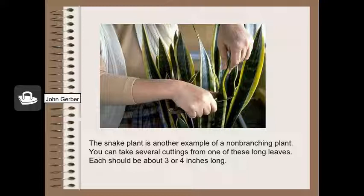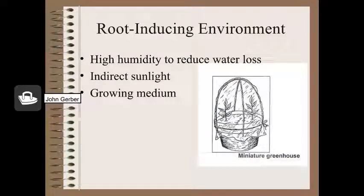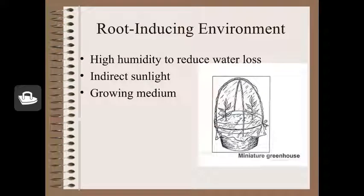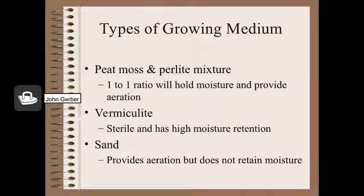Snake plants are really easy — you can cut many two-inch sections of the snake plant to stick into the vermiculite. Since your cutting will have no root system, it's important to keep a high humidity environment and keep the plant out of direct sunlight so it doesn't dry out. Many different kinds of growing mediums can be used: vermiculite is excellent, sand can be used, perlite — anything that has good aeration and doesn't get too wet. I like vermiculite because it's sterile and has good moisture retention as well as good aeration.